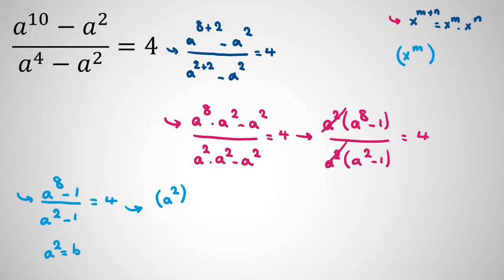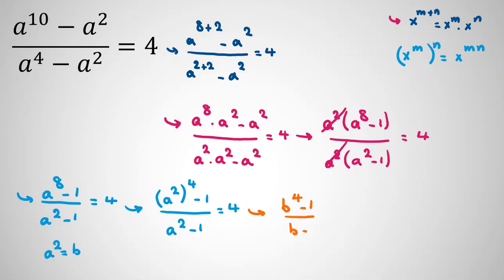Using the power rule x^(m·n) = (x^m)^n, we can write a^8 as (a²)^4. So replacing all a² with b, the equation becomes (b^4 - 1) / (b - 1) = 4.